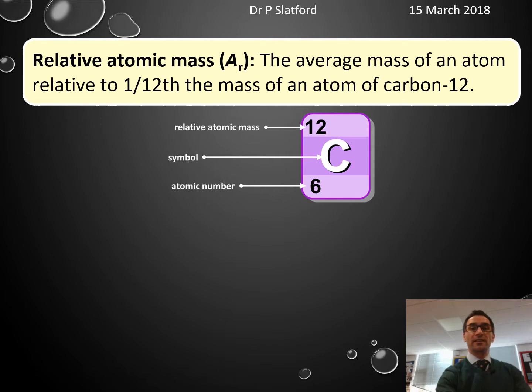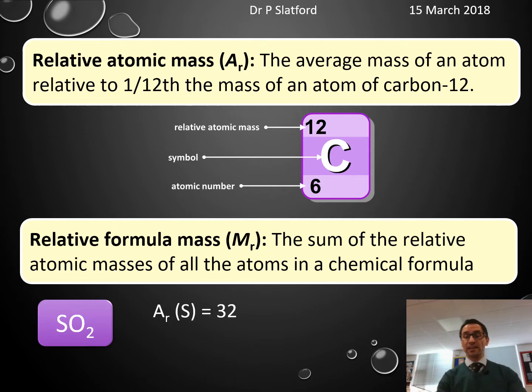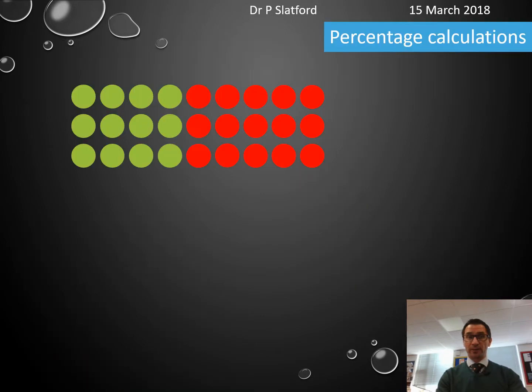Relative formula mass is the sum of all the atomic masses in the molecule. For example, for sulfur dioxide (SO2), the atomic mass of sulfur is 32 and oxygen is 16. When we add those up, remembering we've got two oxygens, it comes out as 64.